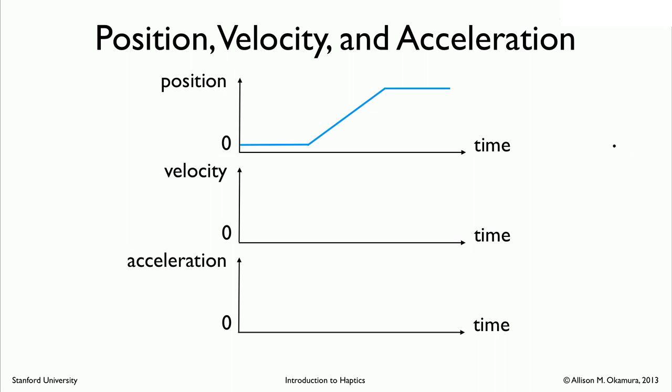So let's look quickly at how position, velocity, and acceleration are related. Let's say we have this very simple plot of position versus time. So you hold steady, you move to a new position, and then you hold steady again. The velocity plot is going to look like this. When you're holding steady, obviously the velocity is zero. But then the velocity jumps to a constant value, because that value is the slope of the position versus time plot.